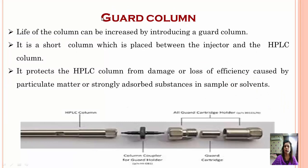Before the HPLC column, a guard column is placed. The main column is the heart of the instrument where separation actually takes place. To increase the life of this column, any impurities associated with your mixture or solvent can be removed by the guard column placed before the HPLC column. It is very short, positioned between the injector and the HPLC column. It acts as a filter, avoiding damage and loss of efficiency before the sample and components move to the HPLC column for separation.